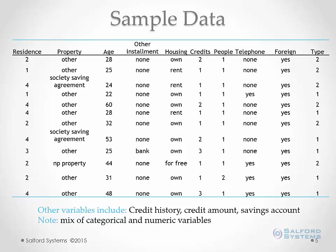The variable all the way to the right in this chart is called 'type' — the type of customer. Type 1 is a good credit risk and type 2 is a bad credit risk. Full variable definitions can be found on the UCI website.